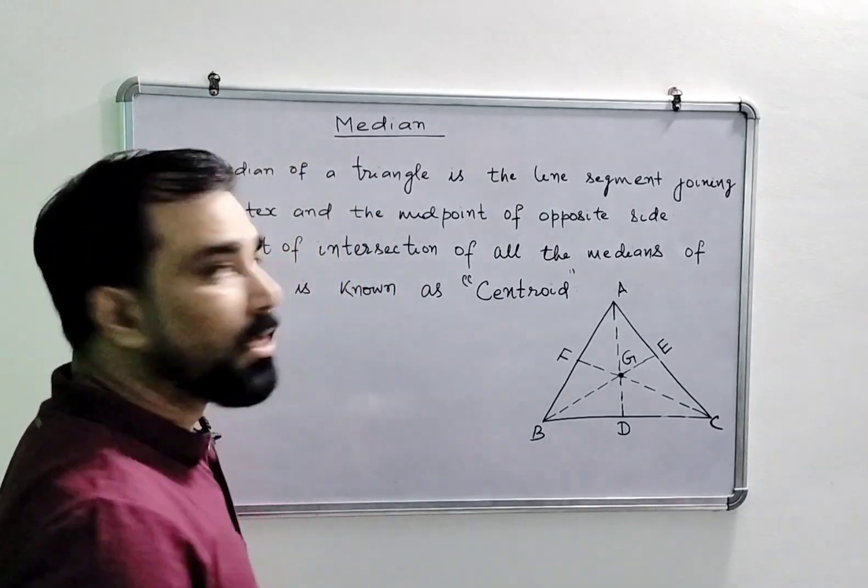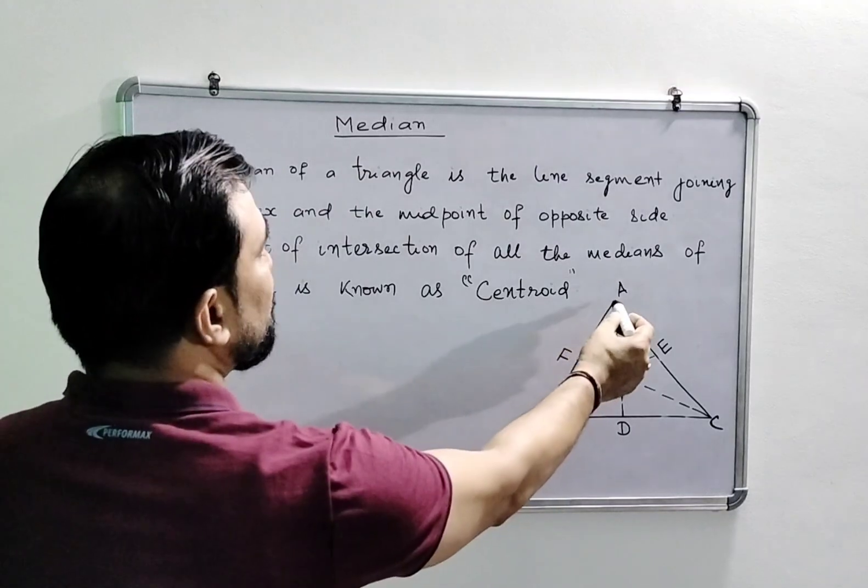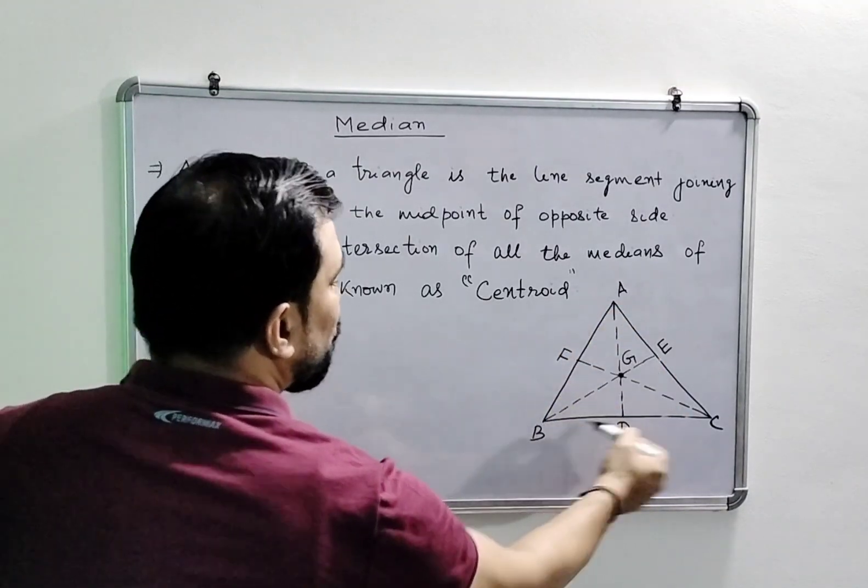Welcome students. Today's topic is median. A median of a triangle is a line segment joining a vertex and the midpoint of the opposite side.